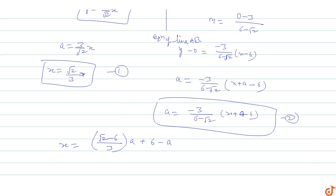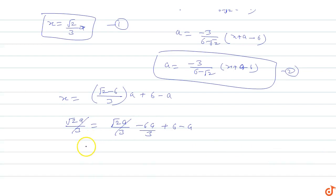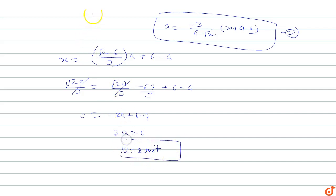From Equation 1, x = (√2/3)a. Substituting into Equation 2: (√2a/3) = [−3/(6 − √2)] × (√2a/3 + a − 6). Simplifying: √2a/3 = −2a + 6 − a... wait, simplifying further gives 0 = −2a + 6 − a, so 3a = 6, therefore a = 2. The side length of the square PQRS is 2 units.